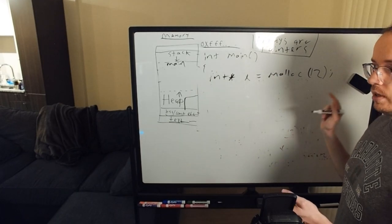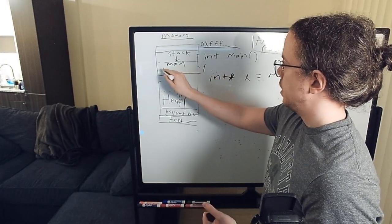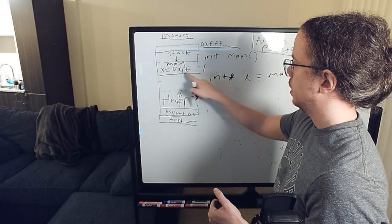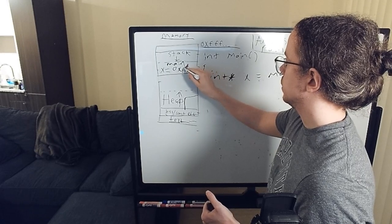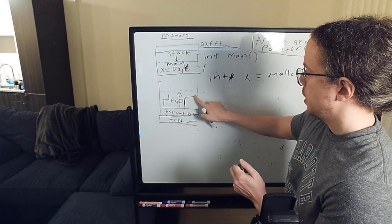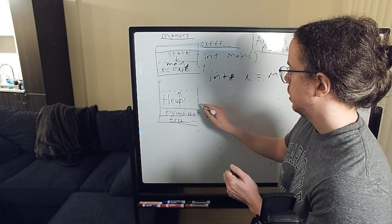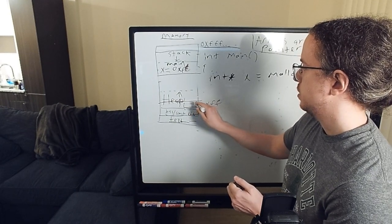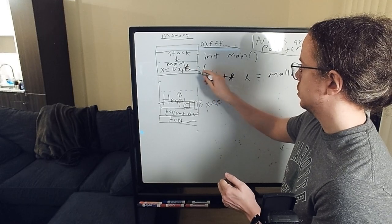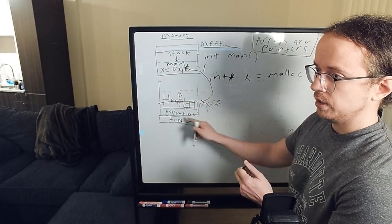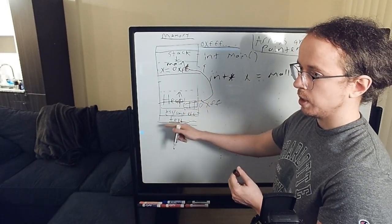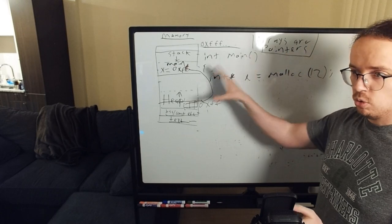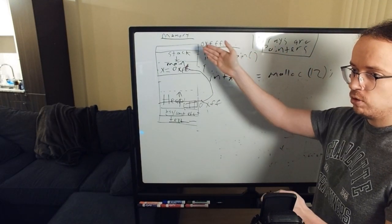We do int star x equals malloc 12. What this is going to do is create main has a stack frame. X is in the stack frame. X is going to be given some memory address 0xff. Well, it's probably not. Well, it could be ff. It could be just about anything. It depends on where things line up. If it's ff, then that means that somewhere on the heap there is memory address 0xff. And we're going to carve out a chunk of the heap to allocate 12 bytes. So this address is some address down here. It's some address in this heap. It tells us how to access memory at this location.